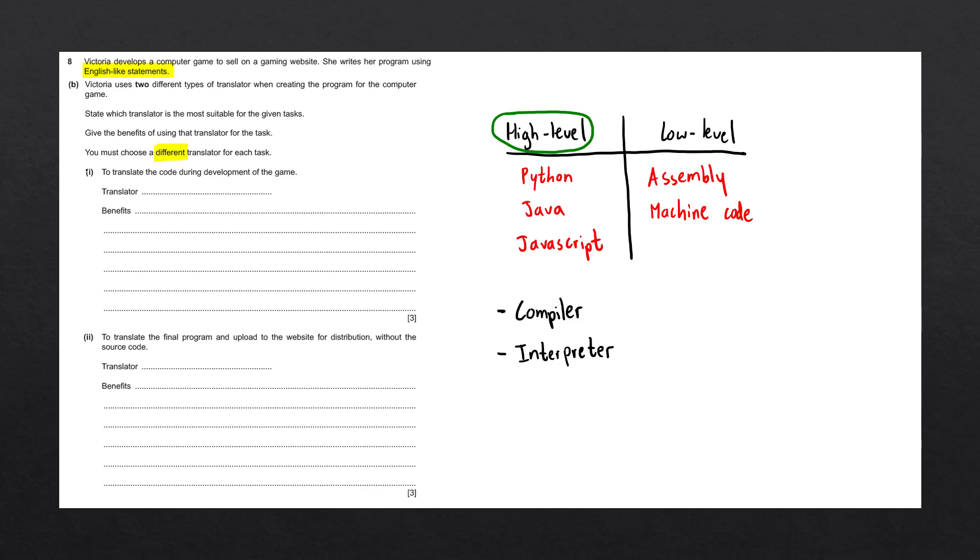The first statement says to translate the code during development of the game. The second statement says to translate the final program and upload to the website for distribution without the source code. A compiler generates what's known as the object code, which is usually stored in an executable file. This file can be executed by the processor and the source code is not contained within this file.